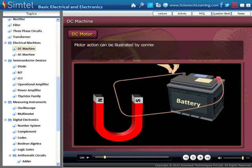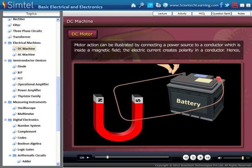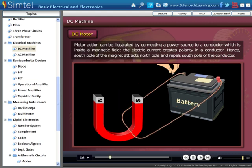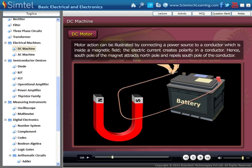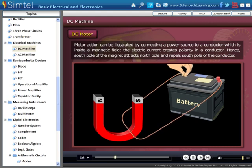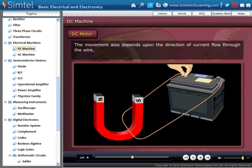Here, motor action can be illustrated by connecting a power source to a conductor which is inside a magnetic field. The electric current creates polarity in a conductor. Hence, south pole of the magnet attracts north pole and repels south pole of the conductor. North pole of the magnet attracts south pole and repels the north pole. This creates movement depending upon the direction of steady magnetic field. The movement also depends upon the direction of current flow through the wire. Changing polarity of a battery conductor now moves in opposite direction.